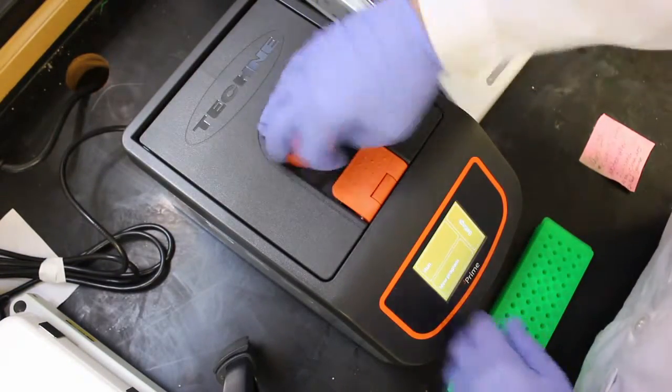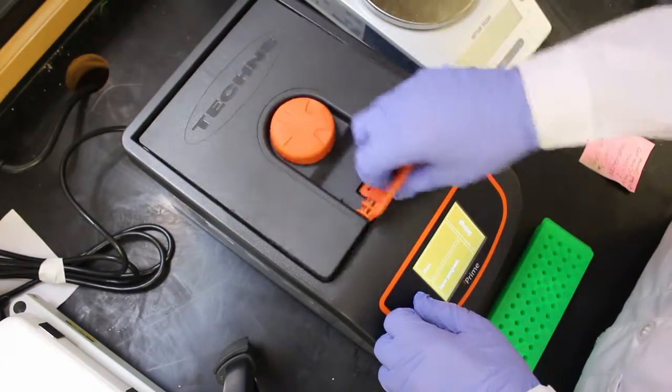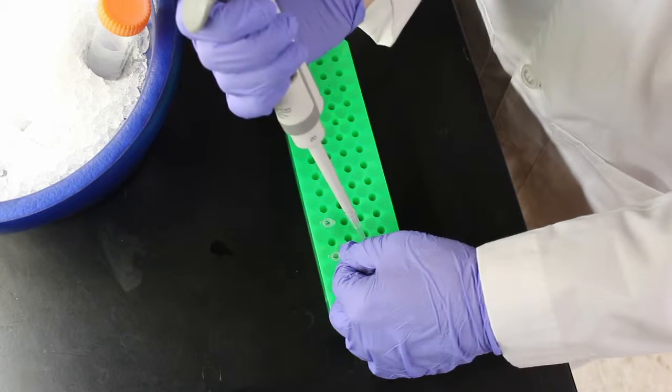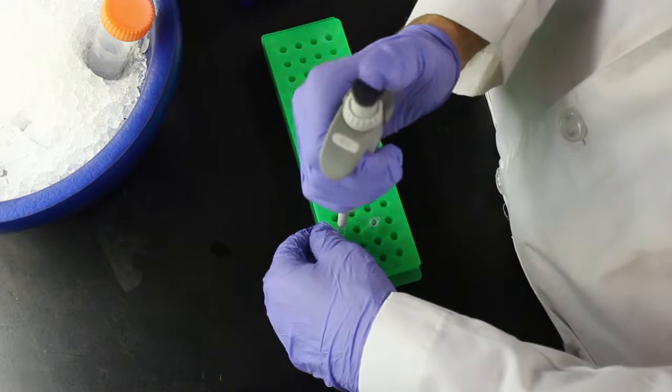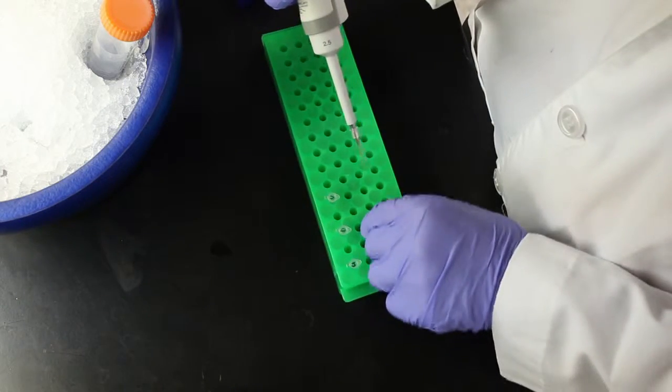Samples may be stored at this point at negative 20 degrees Celsius if needed. To ligate, add 2 microliters of each of the three digestion mixtures to 11 microliters of water in a clean 0.2 milliliter tube.